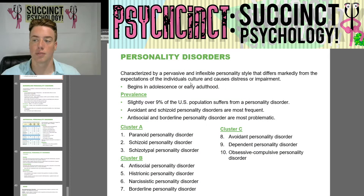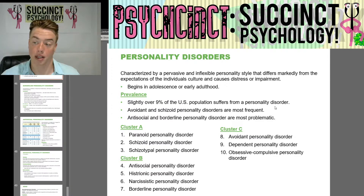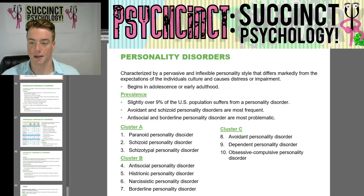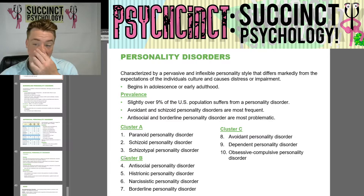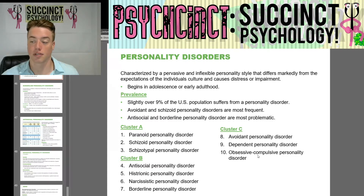Personality disorder is characterized by a pervasive and inflexible personality style that differs markedly from the expectations of the individual's culture and causes distress or impairment. It begins in adolescence or early adulthood. Prevalence: slightly over 9% of the U.S. population suffers from a personality disorder. Avoidant and schizoid personality disorders are most frequent, while antisocial and borderline personality disorders are most problematic. Cluster A includes paranoid, schizoid, and schizotypal personality disorders. Cluster B includes antisocial, histrionic, narcissistic, and borderline. Cluster C includes avoidant, dependent, and obsessive-compulsive.